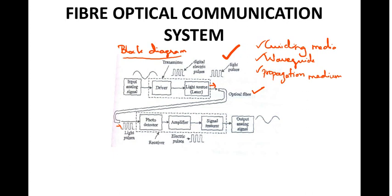At the other end, by total internal reflection, the light pulses are received by the receiver. The receiver consists of a photo detector that detects the pulses, an amplifier that amplifies the signal, and a signal restorer that converts the light signal back into electric pulses and finally into the output analog signal — the same signal that was sent at the transmitter. This is the advantage and efficiency of fiber optic communication.